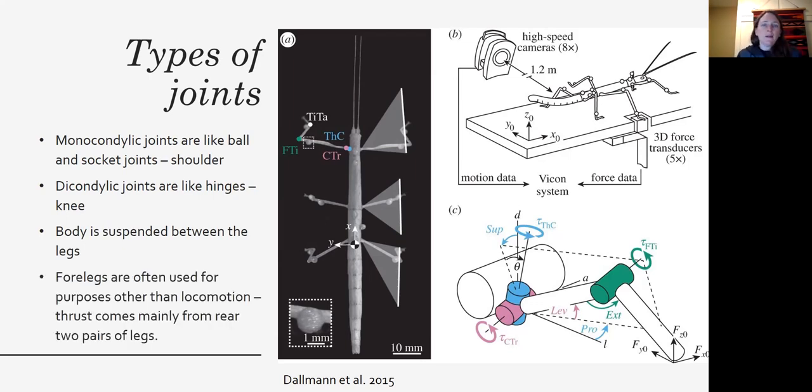A lot of organisms use all six legs for locomotion, but some organisms mainly use the back two with the front legs having different purposes. Things like feeding or digging, other things. So it really depends on the organism whether they're going to use all six legs for locomotion or just four.